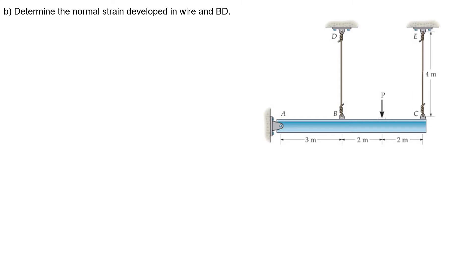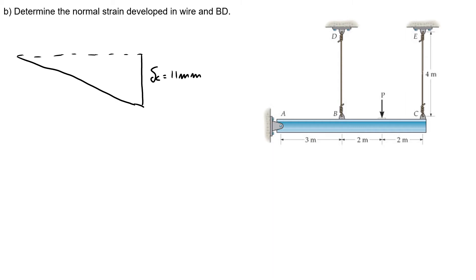Or, the strain is 2.75 mm per mm, which is more common. Now, determine the normal strain developed in wire BC. We have the same approach — we know the displacement in C is 11 mm. Now we want to find the displacement in B. We know our dimensions: here is 4 and here is 3 meters.